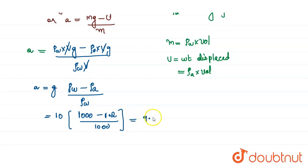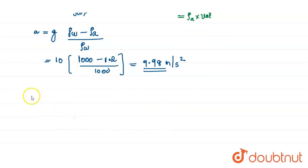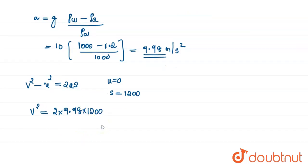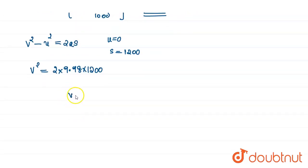On calculating, we get the value as 9.98 m/s². So we get the acceleration. Then we can find the velocity from the equations of motion. v² - u² equals 2as. Initial velocity u equals 0 and s equals 1200 meters. So v² equals 2 times 9.98 times 1200.